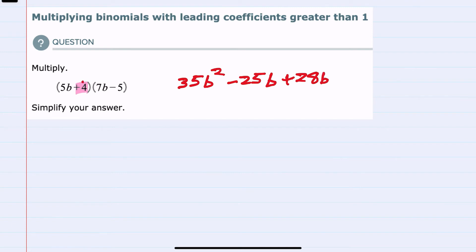And then I would need to multiply the 4 by the minus 5. And 4 times minus 5 is minus 20.